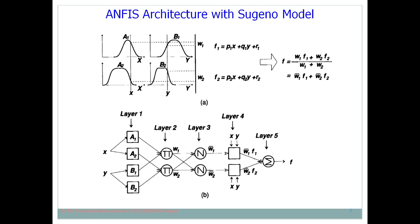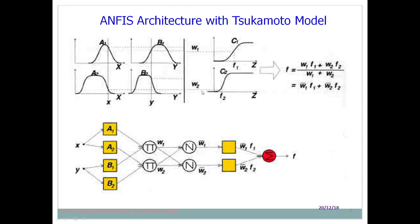Mapping the ANFIS architecture to the Sugeno model: ANFIS has 5 layers. x and y are inputs; a1, a2, b1, b2 are fuzzy variables. Layer 1 is the input, followed by fuzzification, rule processing, defuzzification, and output. The final output is the weighted sum of outputs from each rule. This is how the ANFIS model is mapped to the Sugeno fuzzy model.